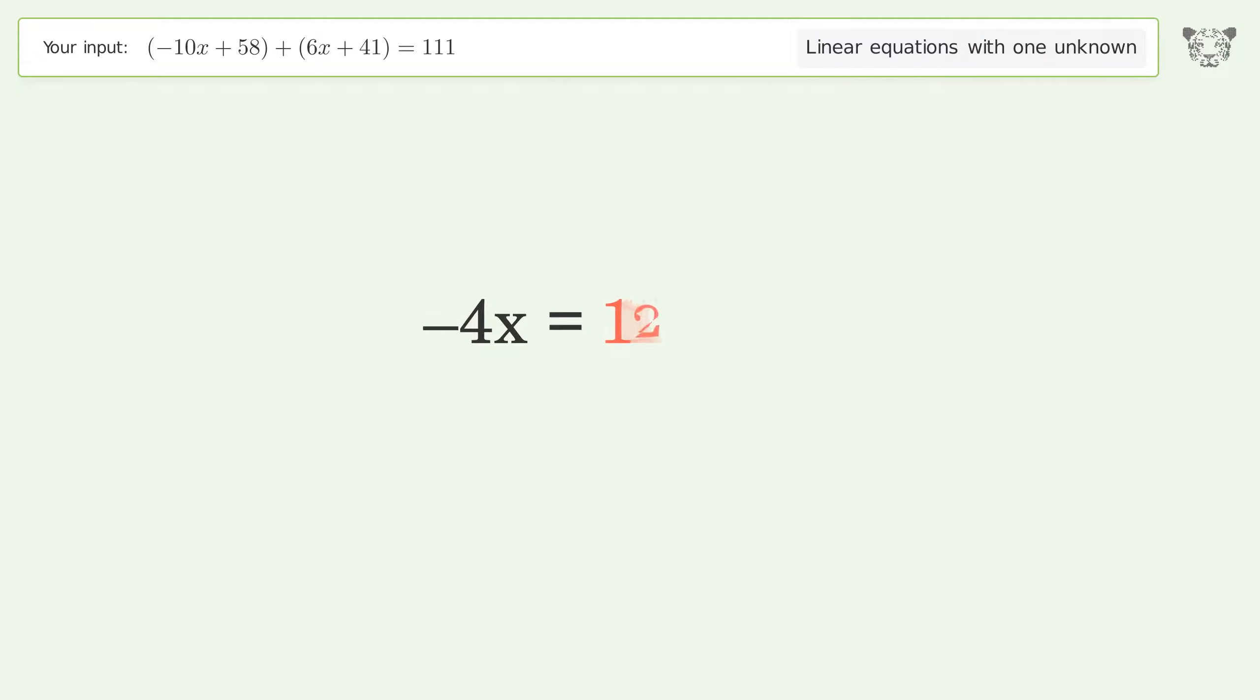Simplify the arithmetic. Isolate the x. Divide both sides by negative 4.